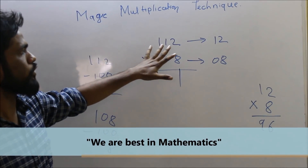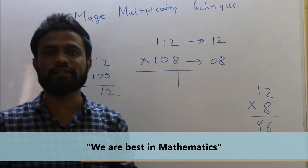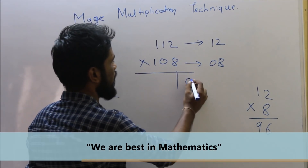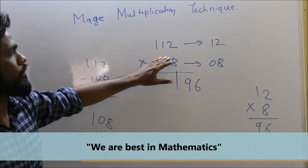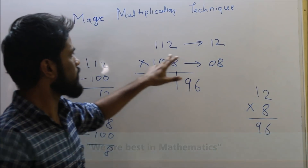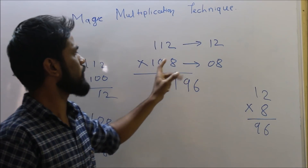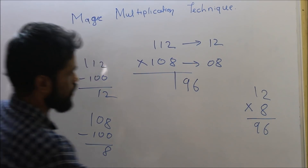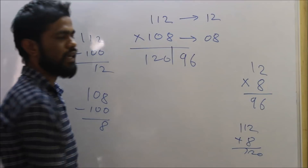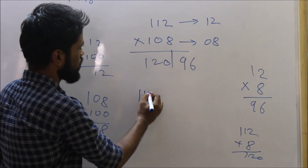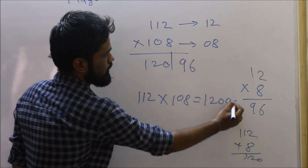Listen carefully — we are doing multiplication of three-digit numbers but comparing with one hundred, so the last compartment answer must be two digits. Write ninety-six there. Since these numbers are more than one hundred, we modify the next step: add eight to one hundred twelve, or add twelve to one hundred eight — you get the same answer. One hundred twelve plus eight equals one hundred twenty. Our final answer for one hundred twelve multiplied by one hundred eight is twelve thousand and ninety-six.